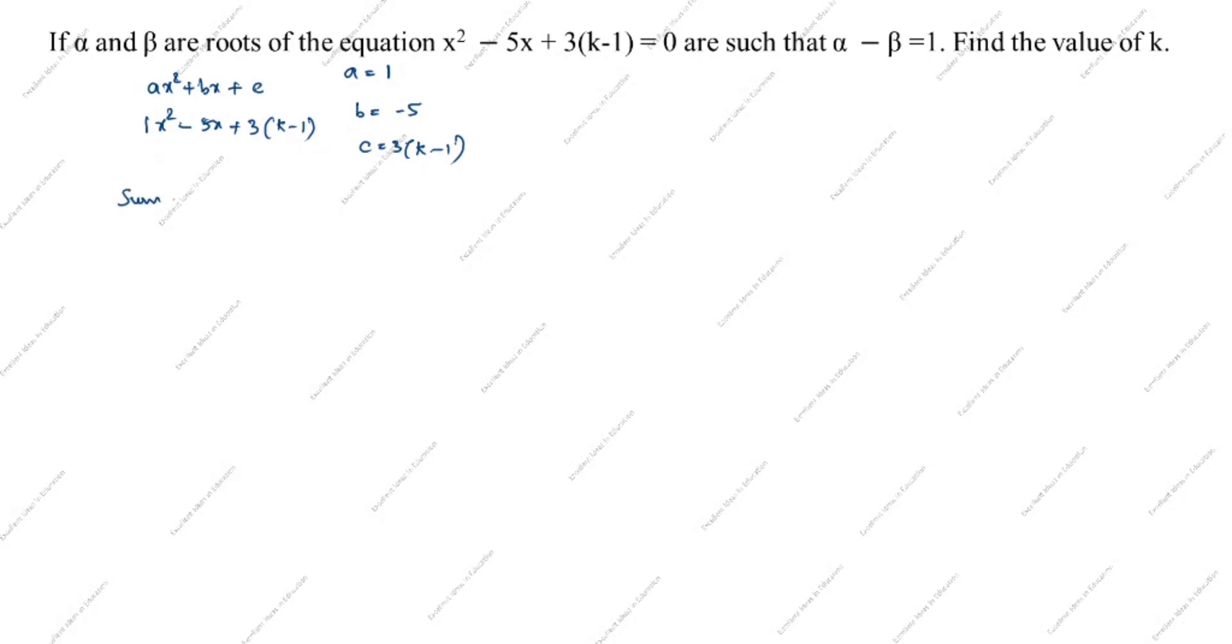Next, sum of the zeros. Sum of zeros alpha plus beta equals minus b by a. b is -5, minus of minus 5 divided by 1. Product of zeros alpha beta equals c by a. What is c? c is 3(k-1) divided by a which is 1. So alpha beta equals 3k - 1.